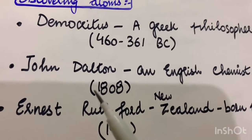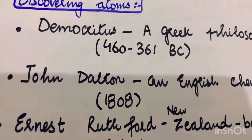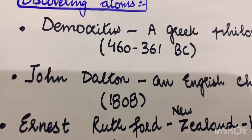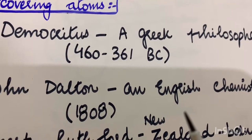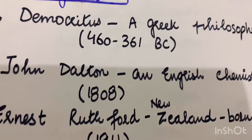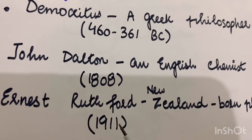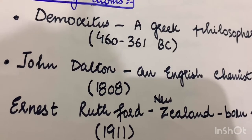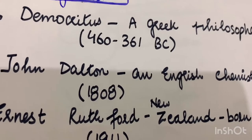In 1808, an English chemist named John Dalton suggested from experiments he had carried out that each chemical element is made up of different atoms, and that elements are different because they are made of different atoms. In 1919, a New Zealand-born physicist named Ernest Rutherford discovered that atoms have a very tiny dense center called the nucleus.